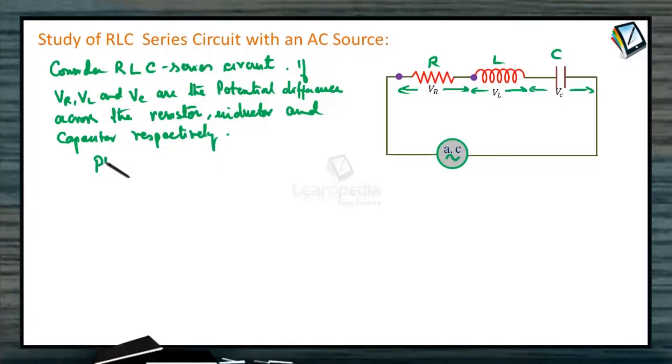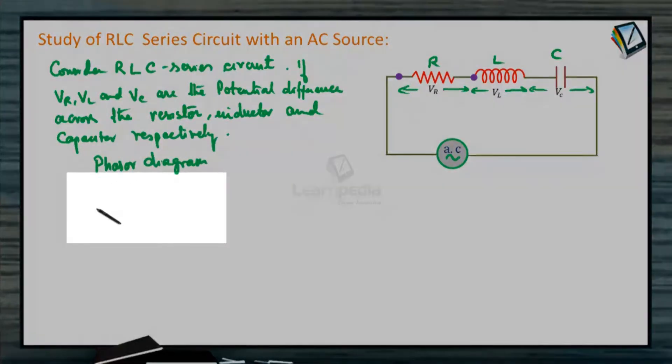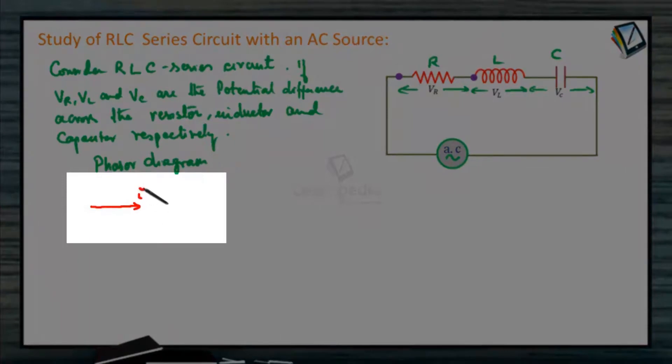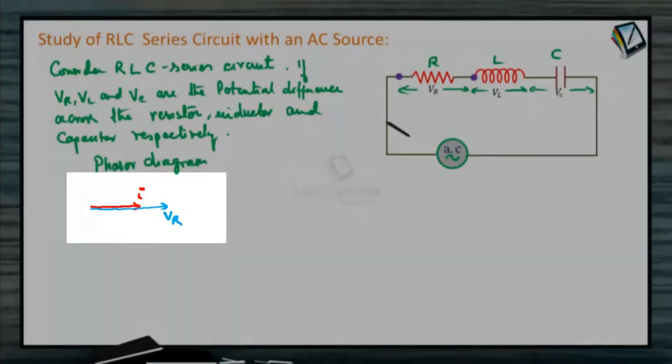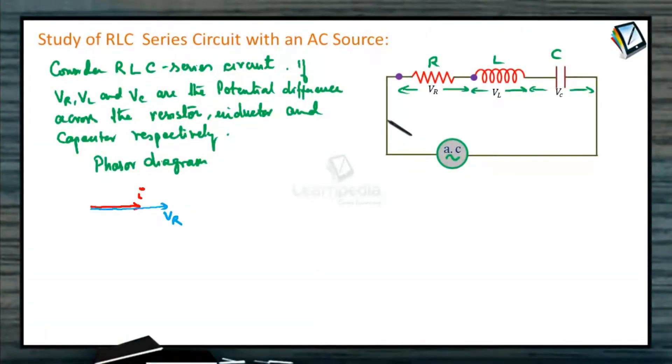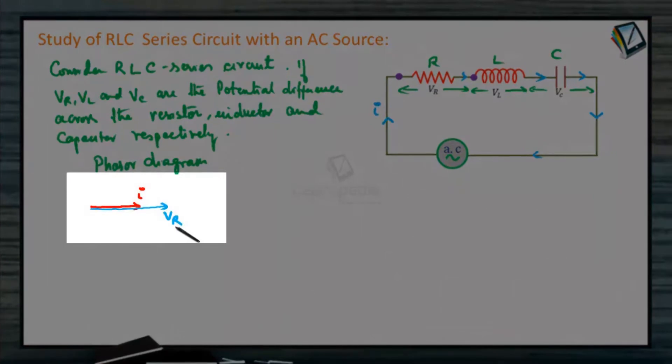We know the phasor diagram for each. Across resistor, if you consider current in this direction, potential also will be in the same direction. So VR and current both are in the same direction. The current I is flowing in this arm across the resistor, inductor and capacitor. Current and voltage are in the same phase across resistor.